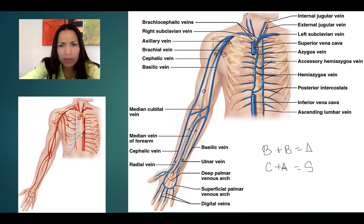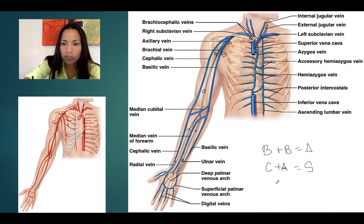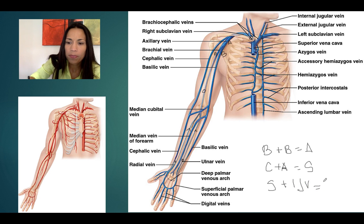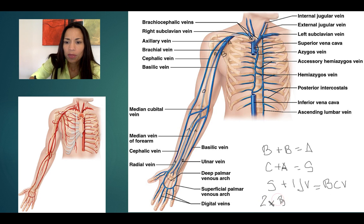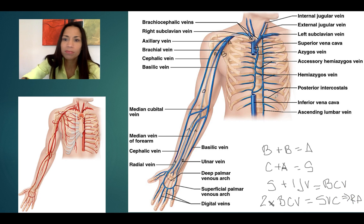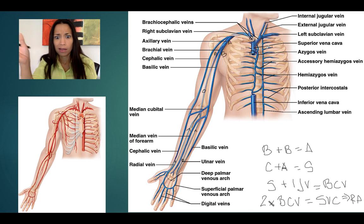The subclavian vein receives blood from the external jugular vein. Then subclavian plus internal jugular vein forms the brachiocephalic vein. The right and left brachiocephalic veins form the superior vena cava, which opens into the right atrium. So I hope this helps to understand all of this.